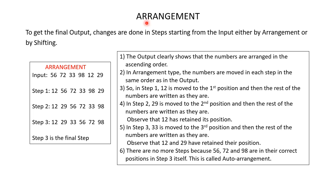To get the final output, changes are done in steps starting from the input either by arrangement or by shifting method. In the arrangement method, look at this example — you are given an input which consists of only numbers. Then you are given three steps and step 3 is the final step, meaning step 3 is the output.